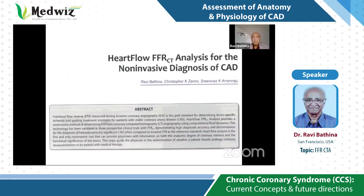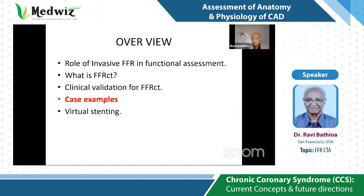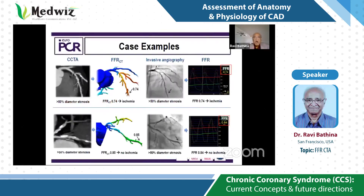This is an abstract I wrote a couple of years ago for CSI annual updates, along with Dr. Christopher Jardins from HeartFlow and Dr. Srinivas Kumar from Apollo Hospital, Hyderabad. Looking at the case examples: the top panel shows CCTA done non-invasively with 50% or more stenosis, FFRCT non-invasively reads 0.74, indicating positive for ischemia — and this was confirmed by invasive angiography and invasive FFR. The lower panel shows a similar lesion of more than 50%, but FFRCT non-invasively shows it is non-functional and non-significant — again confirmed by invasive FFR. The point is we can do everything non-invasively and prevent unnecessary invasive procedures.